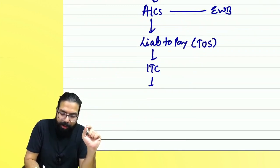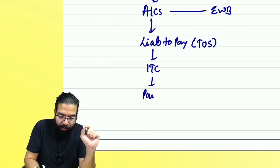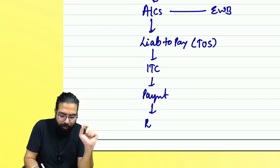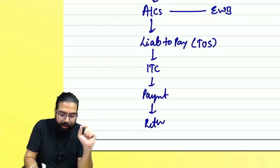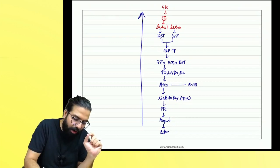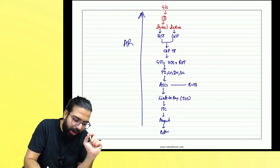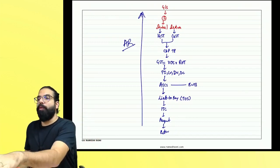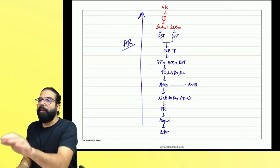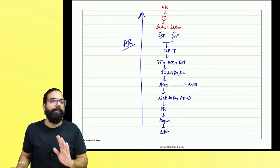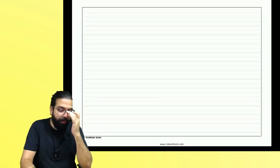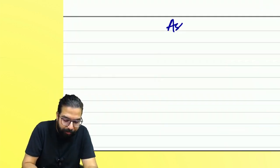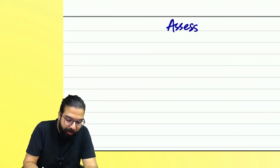Once you send the goods with the help of the e-way bill, your liability to pay GST will come, and liability comes at the time of supply. You will use your input tax credit, pay the remaining amount, file your returns, and at any stage if you have a doubt, you can go to the advance ruling. From your point of view, the job is done. Now the job starts from the department's point of view, and hence comes the chapter of assessments.